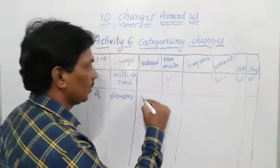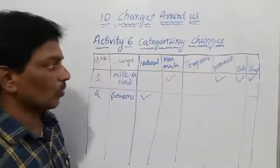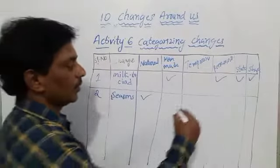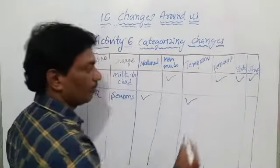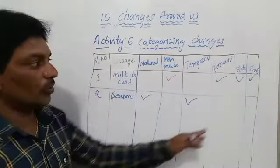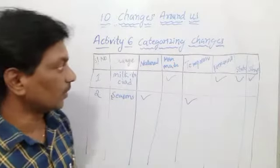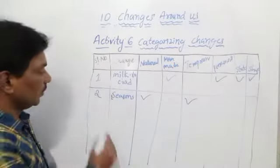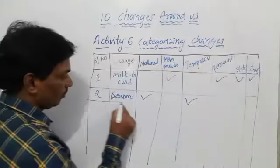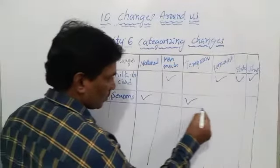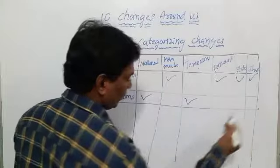The second example is changing seasons. Seasons are a natural change. It is a temporary change because seasons keep changing. There is no state change and no shape change for seasons.